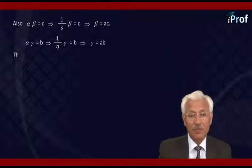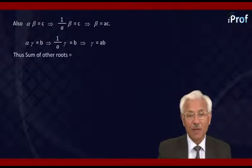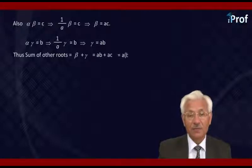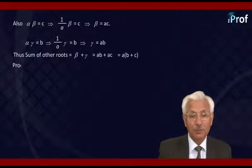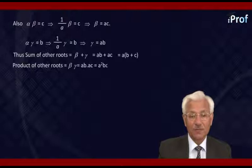Now, the sum of the other roots that we have to find out is beta plus gamma, that means AB plus AC, which is A times (B plus C). The product of roots is beta into gamma, which is AB into AC, that is equal to A squared BC.